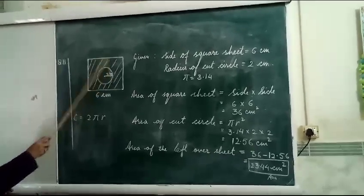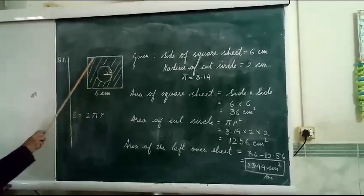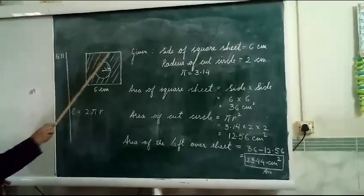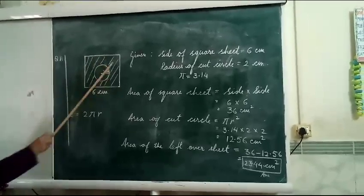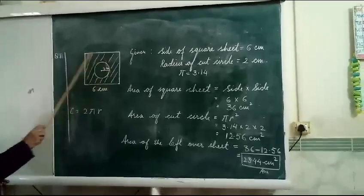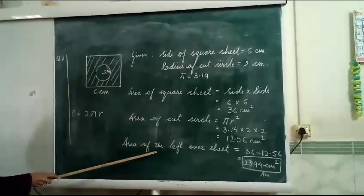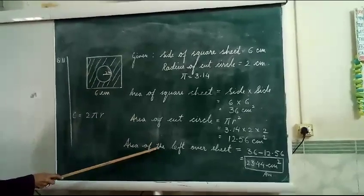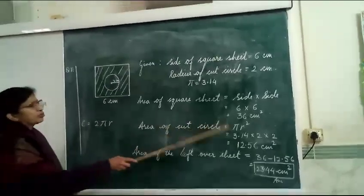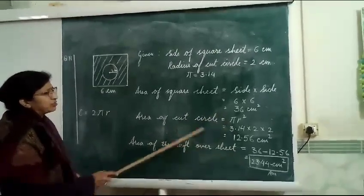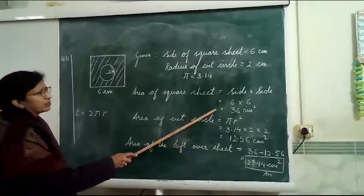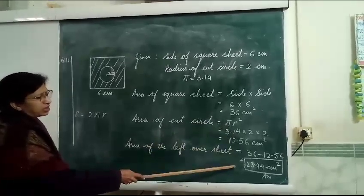That cut from the aluminum sheet. The area of this drawn line is the remaining sheet or leftover sheet. Just subtract the area of the circle from the area of the square sheet, then you get the answer.